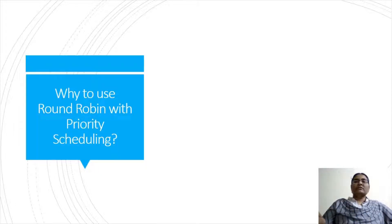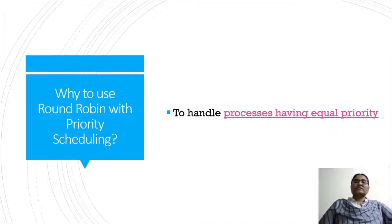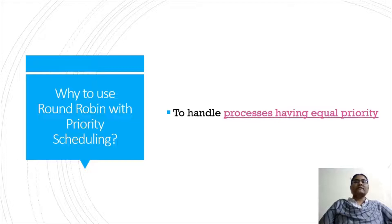There may be a situation where among a set of processes, few processes may have equal priority. To handle that situation we have to go with either first come first served algorithm or round robin scheduling algorithm along with priority scheduling. For example, among six processes, three processes have priority two — so how should we handle these three processes bearing equal priority? We can make use of first come first serve algorithm based on the arrival time of these processes, or else we can go with round robin scheduling algorithm.